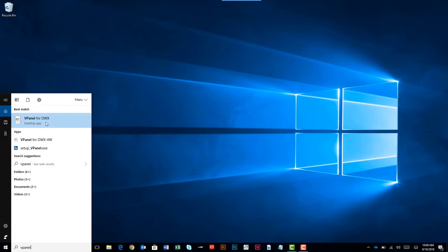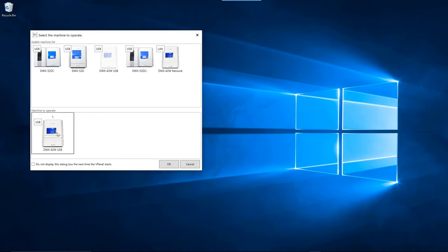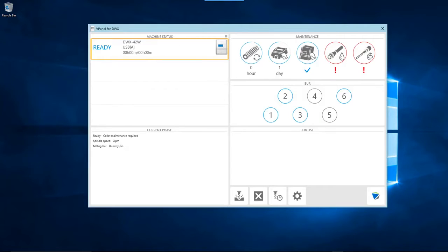Open vPanel on your computer. When the machine selection screen appears, select the DWX-42W and click the OK button. Once the vPanel home screen appears, click on the Settings button.